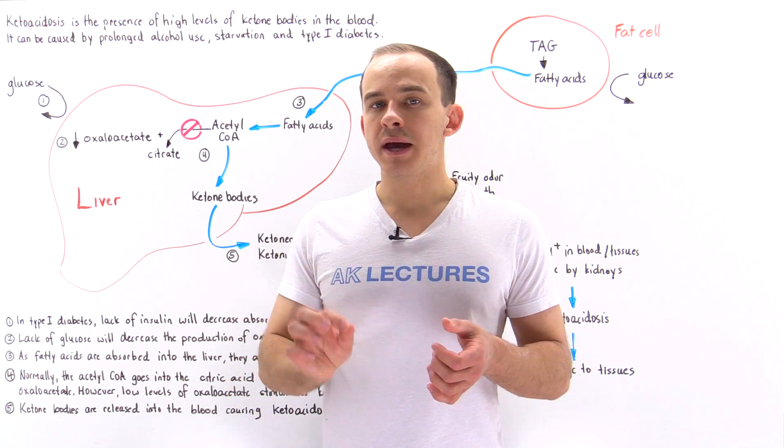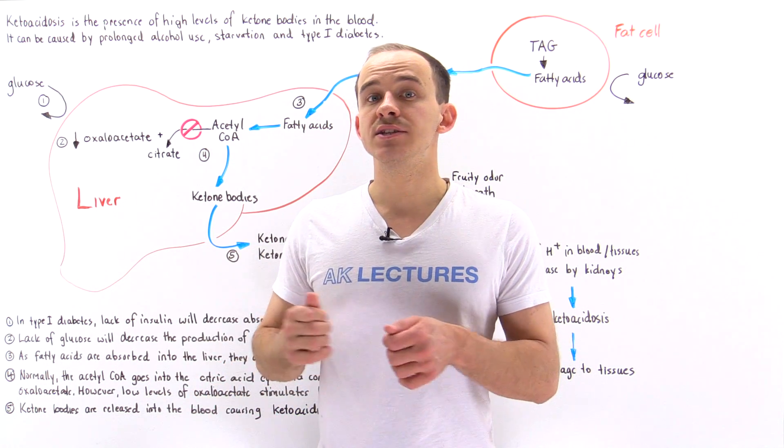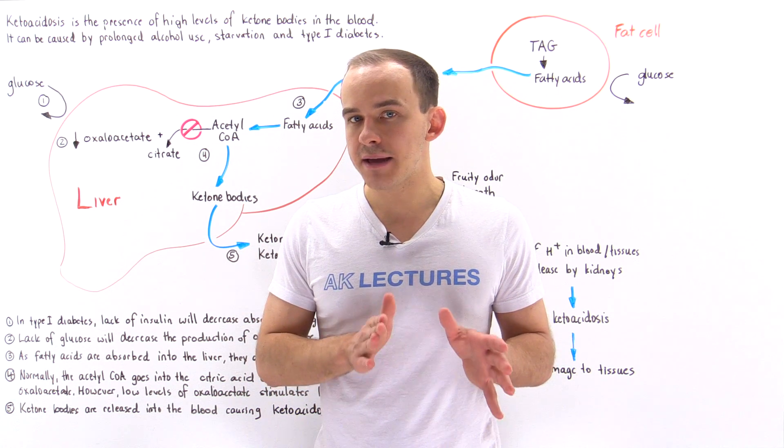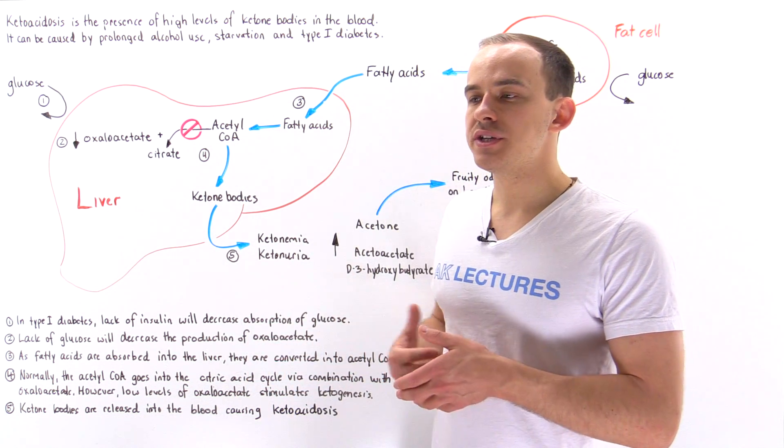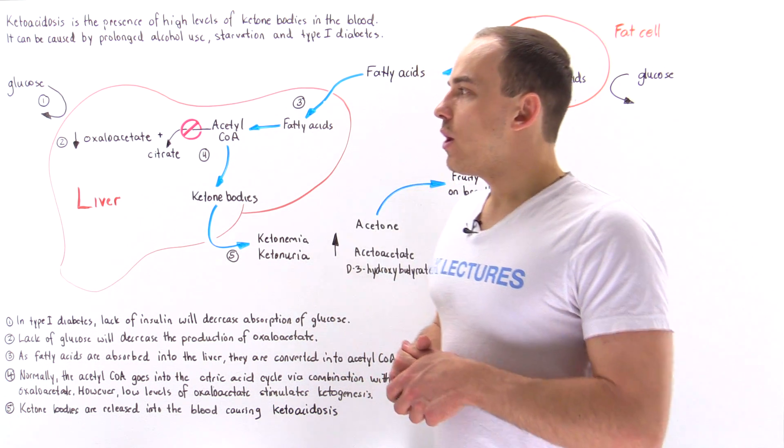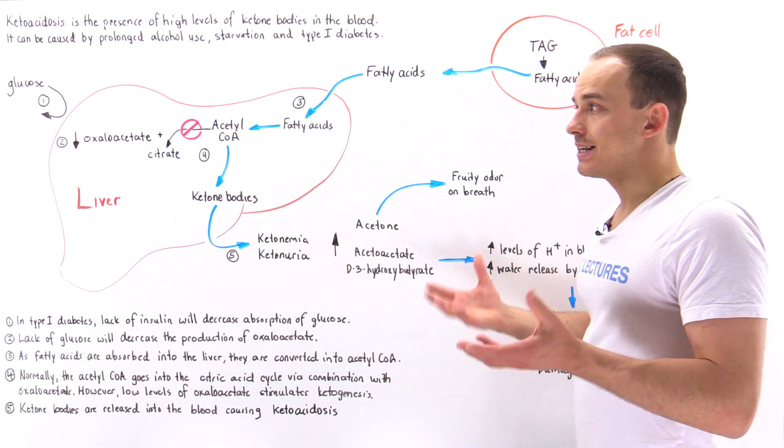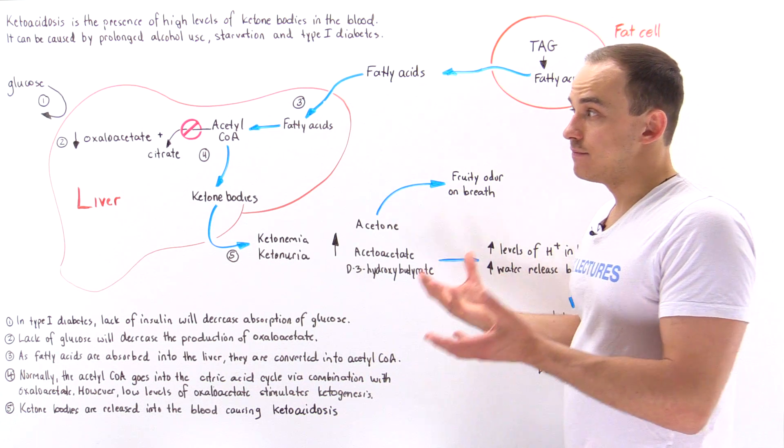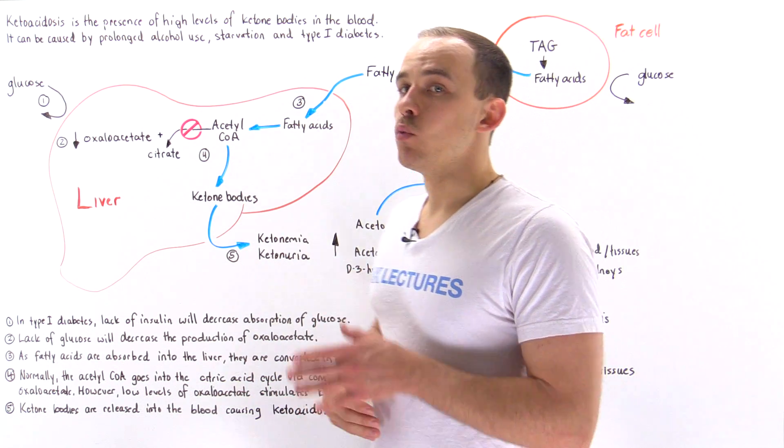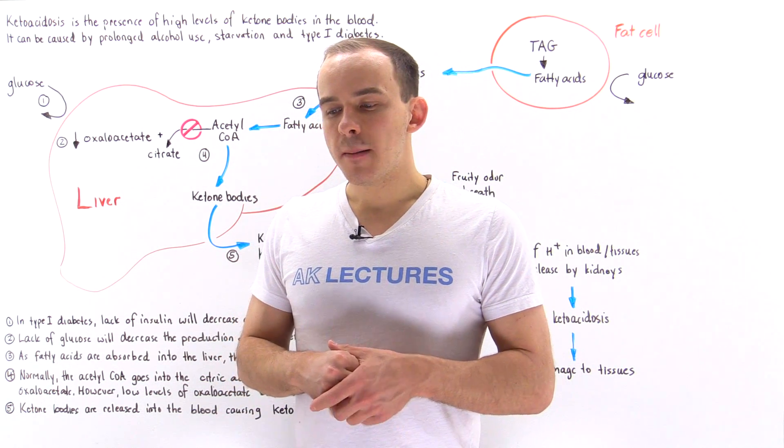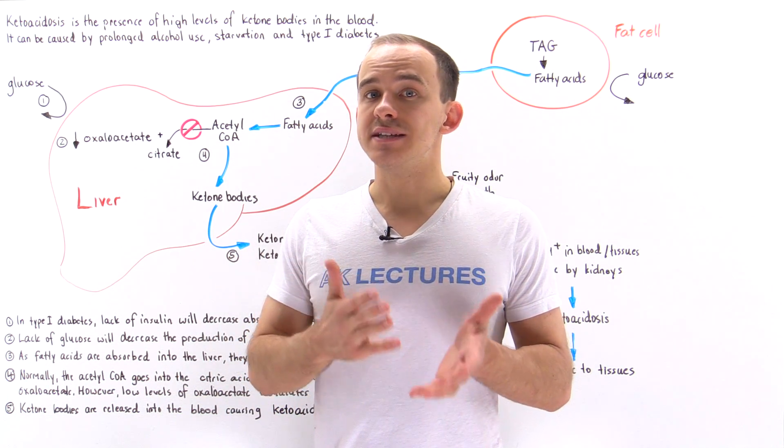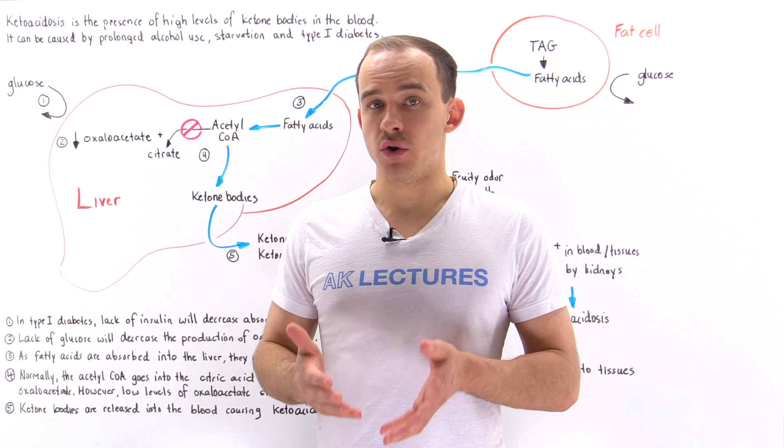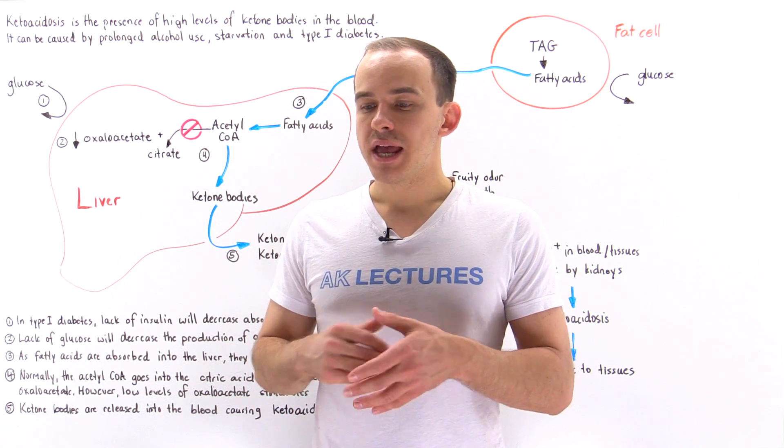Type 1 insulin-dependent diabetes can cause ketoacidosis if that diabetes is not regulated. So how does this actually take place? Let's suppose we have a diabetic individual and the diabetic individual forgets to take their insulin. After a meal, we're going to have high levels of glucose inside our blood, a condition known as hyperglycemia.